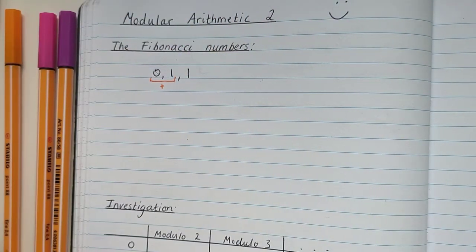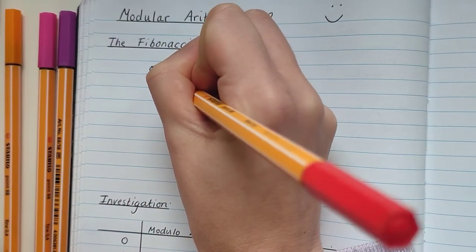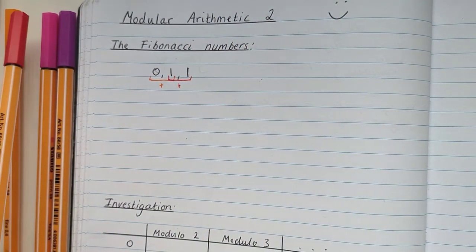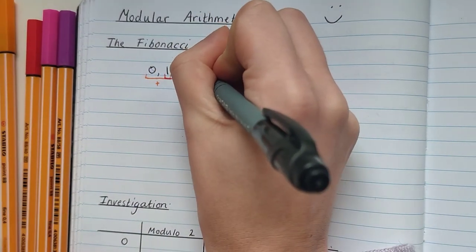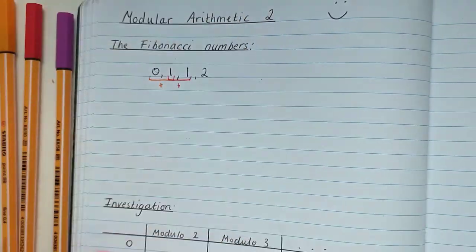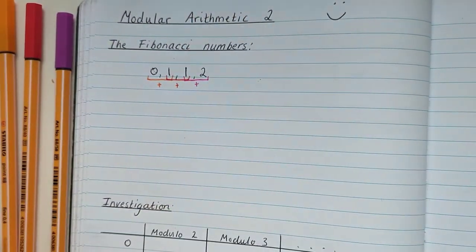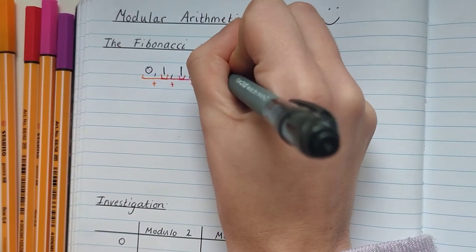Now to get the next number we do the same again, we add the previous two. So this time we're adding 1 and 1. 1 plus 1 make 2, so 2 is the next number in our sequence. To get the next one we need to add 1 and 2. 1 and 2 make 3, so 3 is the next number in our sequence.